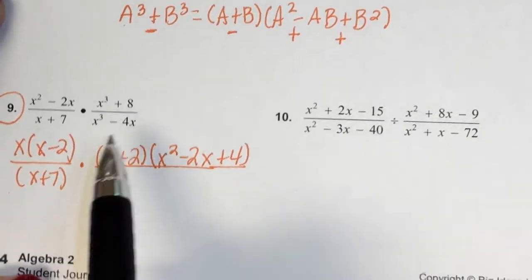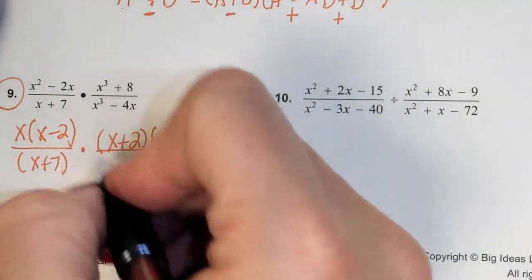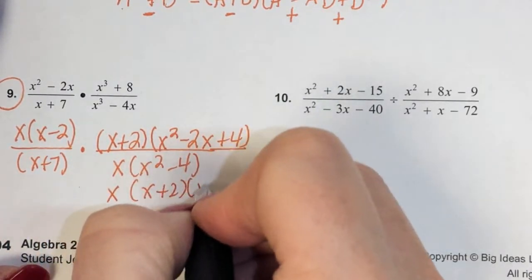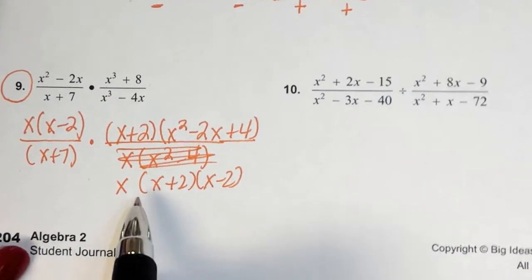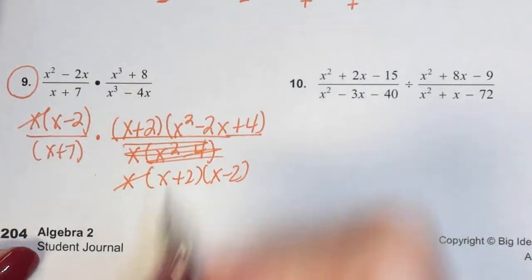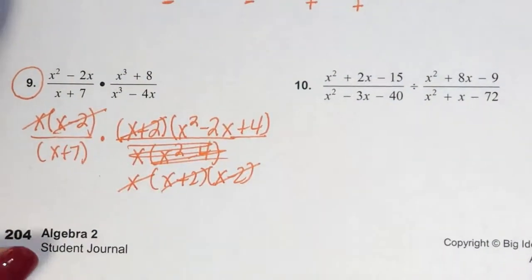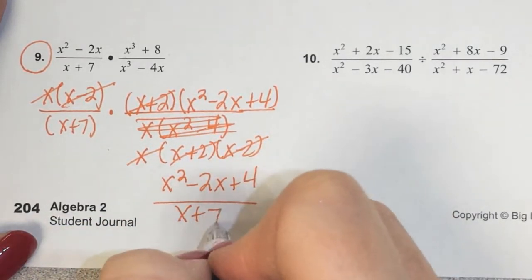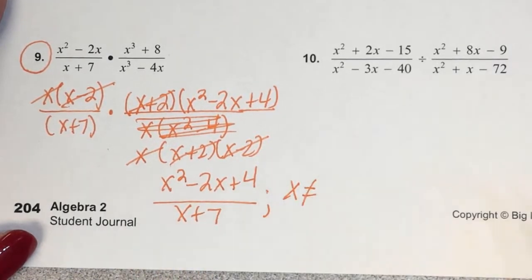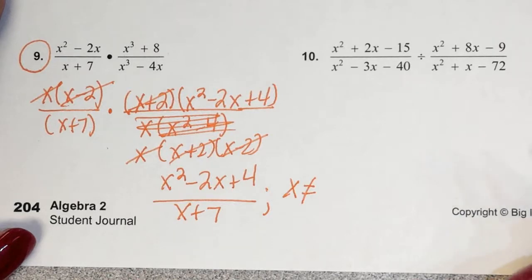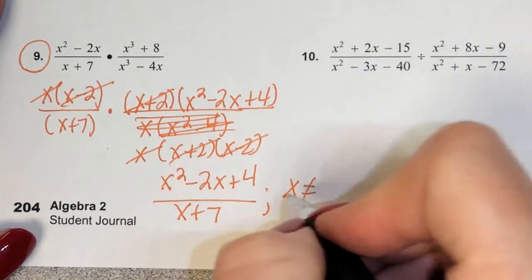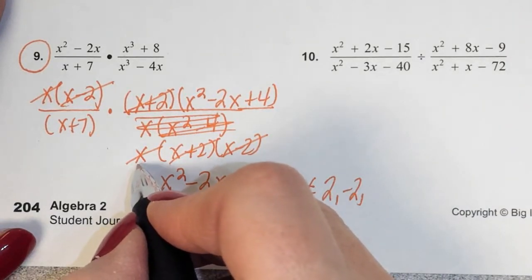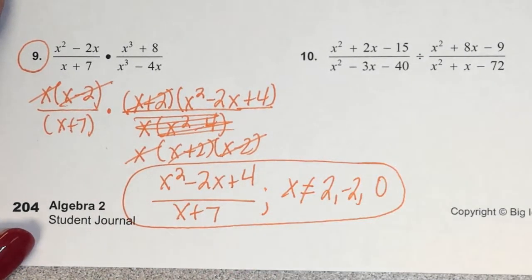People waste time trying to factor the trinomial further — don't. After factoring everything, things cancel: x plus 2 and x minus 2 and x cancel. What we're left with is x squared minus 2x plus 4 over x plus 7. What is x not allowed to equal? Look back at what was in the denominator originally — negative 2 and zero — so those are the restrictions.